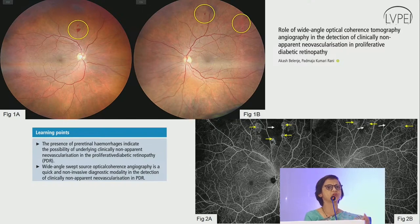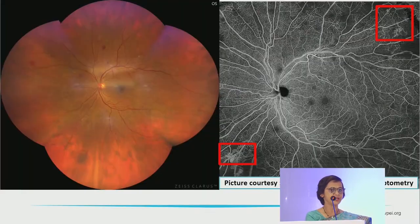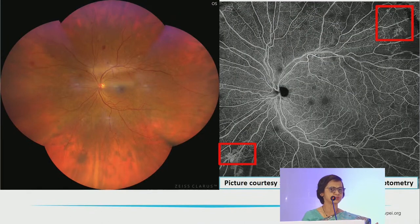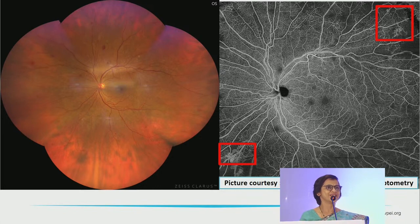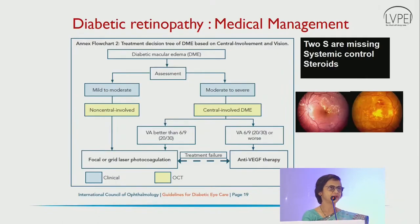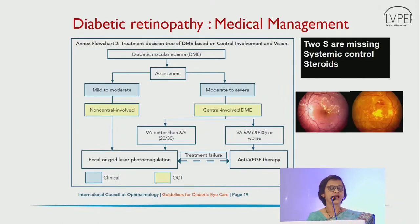This is a non-invasive method of detection of PDR. You can see here a patient with a color fundus picture, and in the periphery in the red boxes you can see nice new vessels. I usually simplify diabetic retinopathy as red dot, yellow dot, and flowers. The flowers can be very easily seen in this wide-angle OCTA, which is one of the latest forms of investigation that we have.